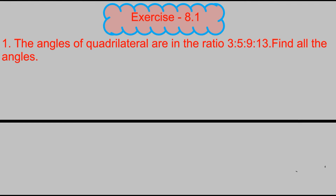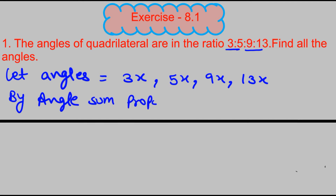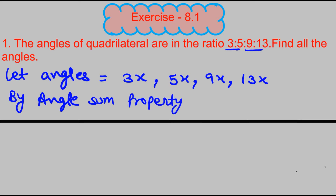Now the angle ratio is given. Since ratio is given, we can express angles as variables. Let the angles be 3x, 5x, 9x, and 13x. By the angle sum property of a quadrilateral, the sum of all four angles equals 360 degrees.